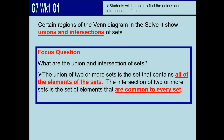Certain regions of the Venn diagram show the union and intersection of sets. In that given problem, we already applied both concepts. The union of two or more sets is the set that contains all the elements of the sets. The intersection of two or more sets is the set of elements that are common to every set.